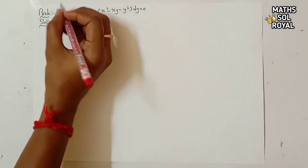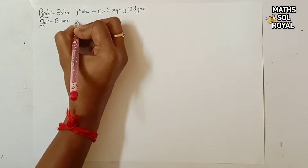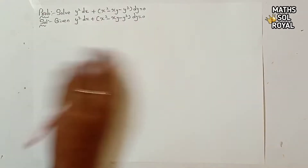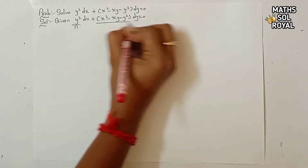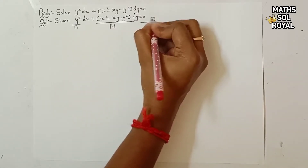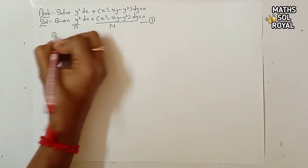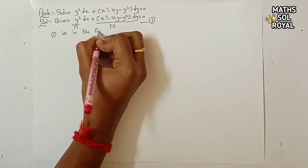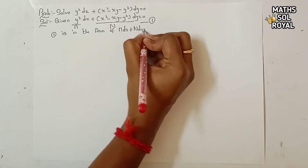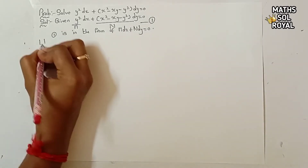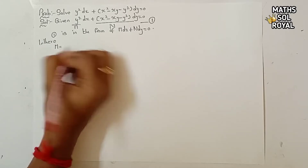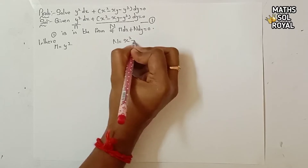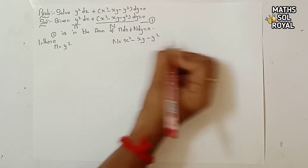The given equation is in the form M dx + N dy = 0. This is equation 1. Here M equals y² and N equals x² - xy - y².